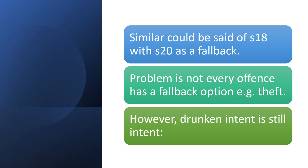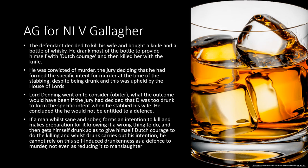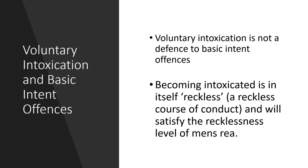Not every offence has a fallback option. We must also remember that drunken intent is still intent, as seen in Attorney General for Northern Ireland v Gallagher. In that case, the defendant decided to kill his wife, and bought a knife and a bottle of whiskey for Dutch courage. He then killed her. Just because he was drunk does not mean he lacked intent — he had drunken intent, and that is still mens rea.